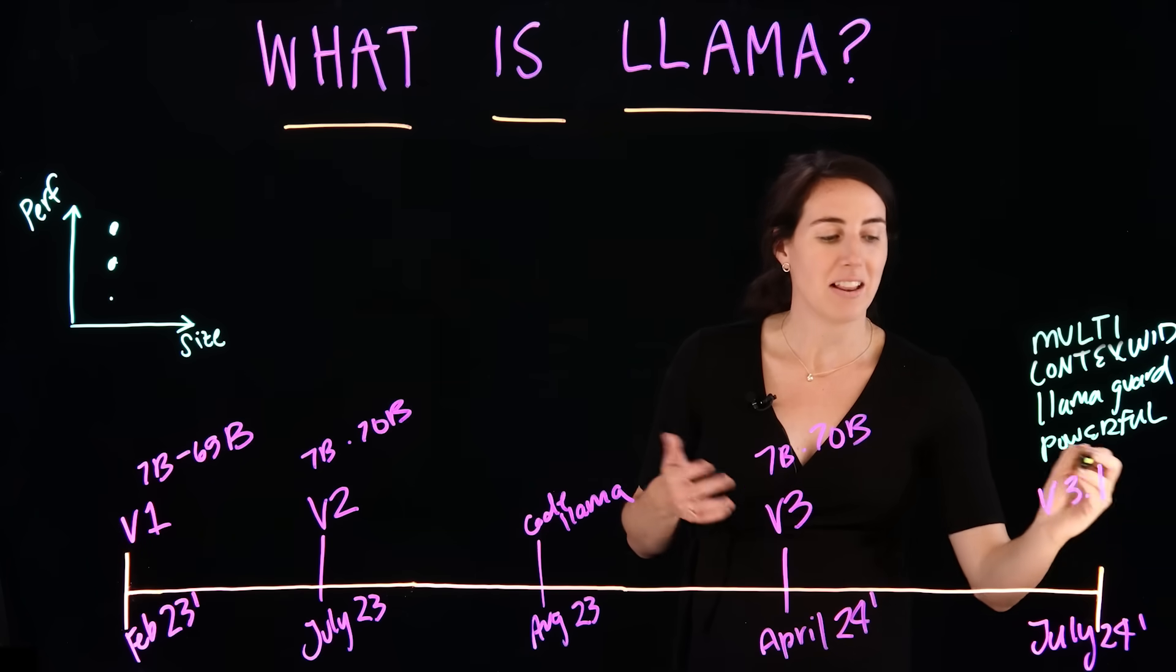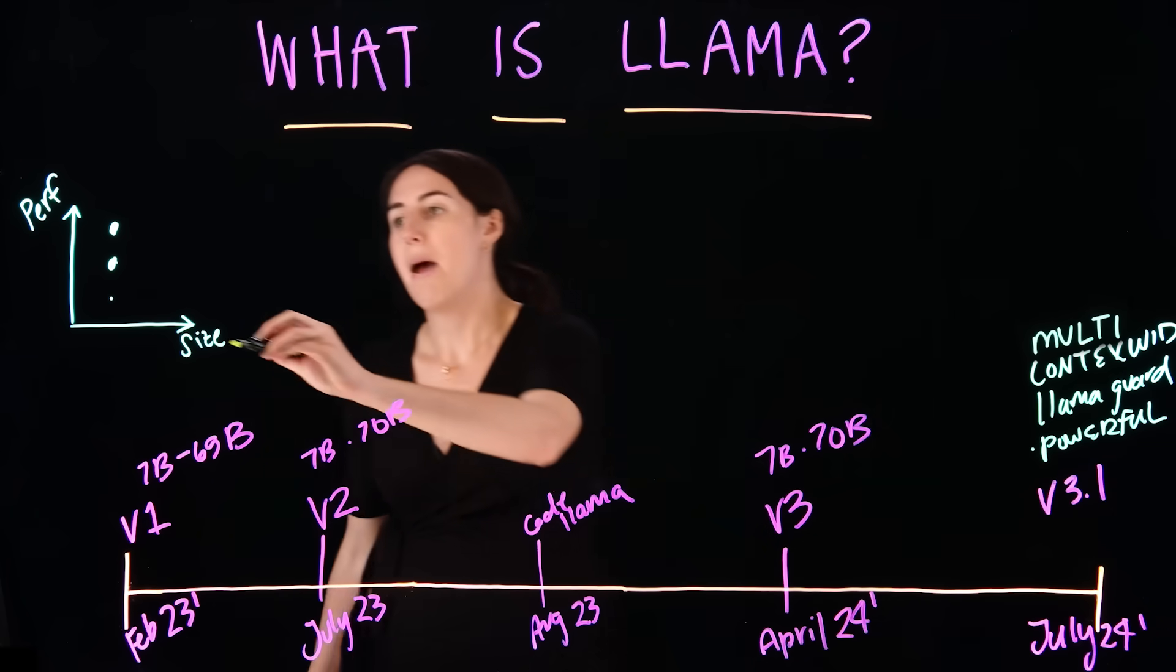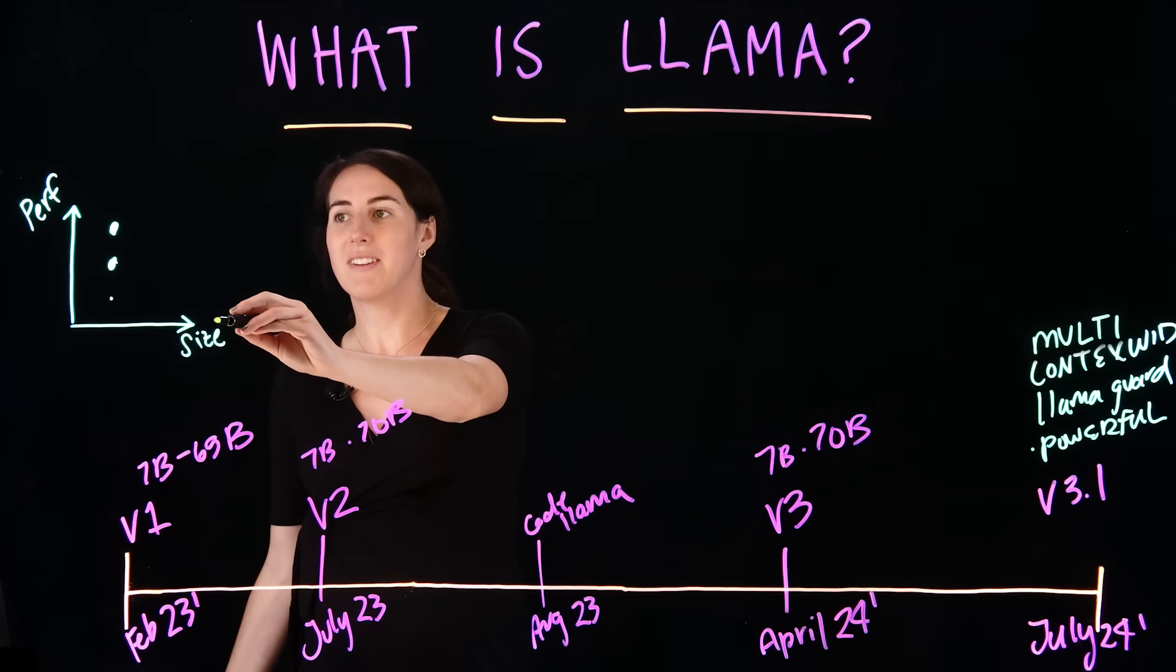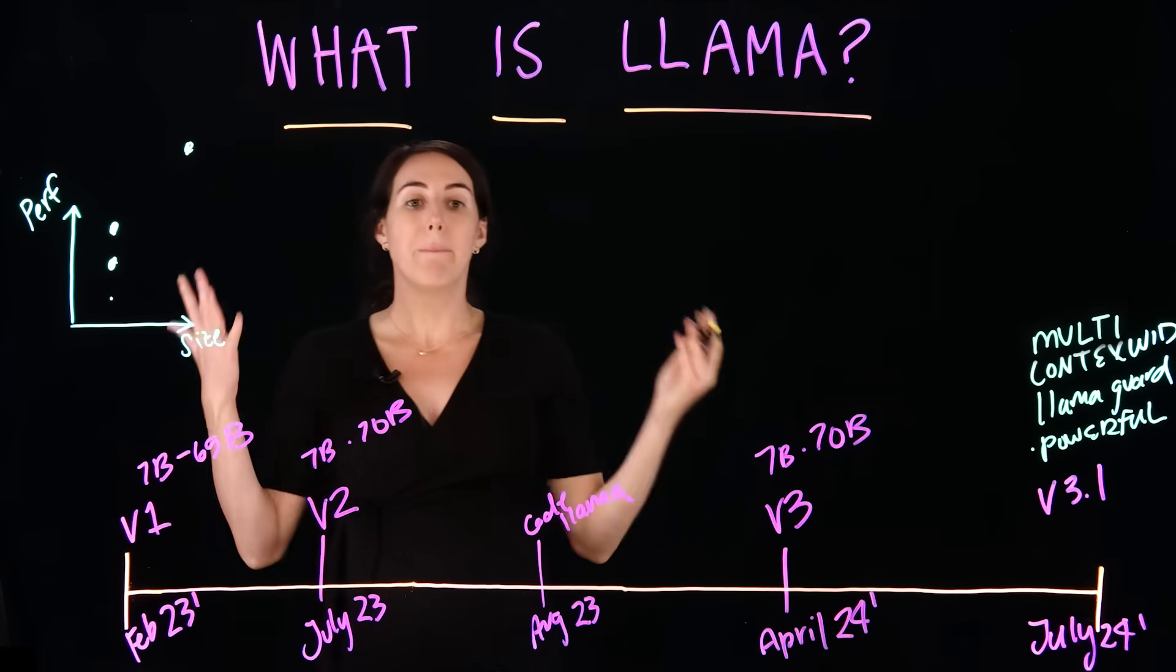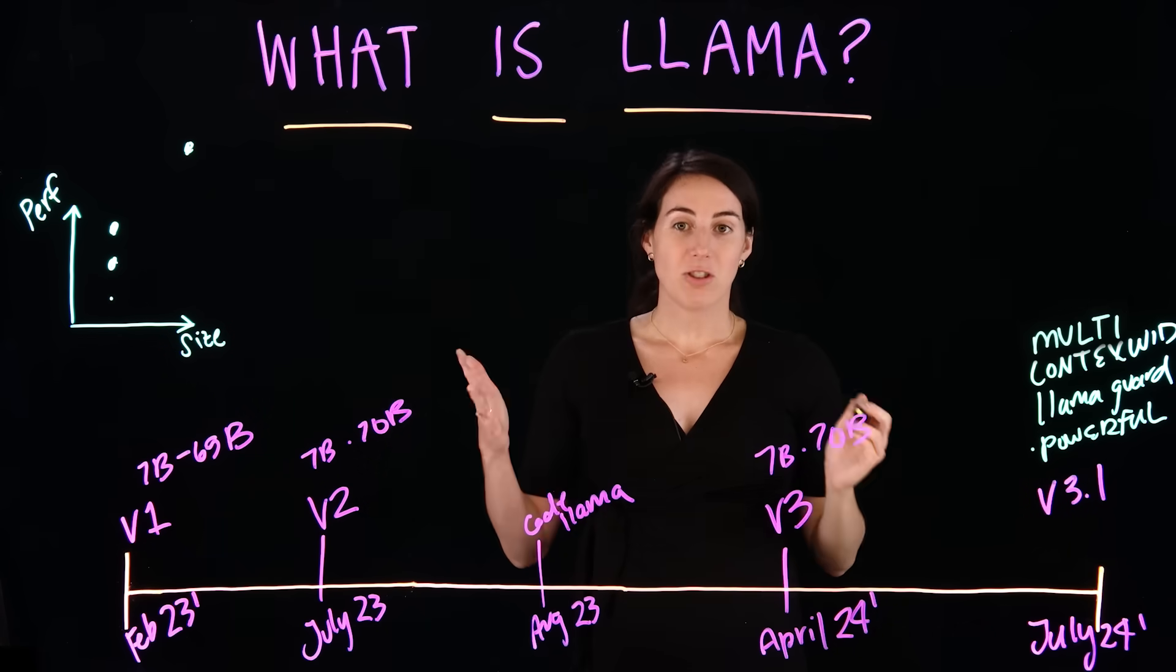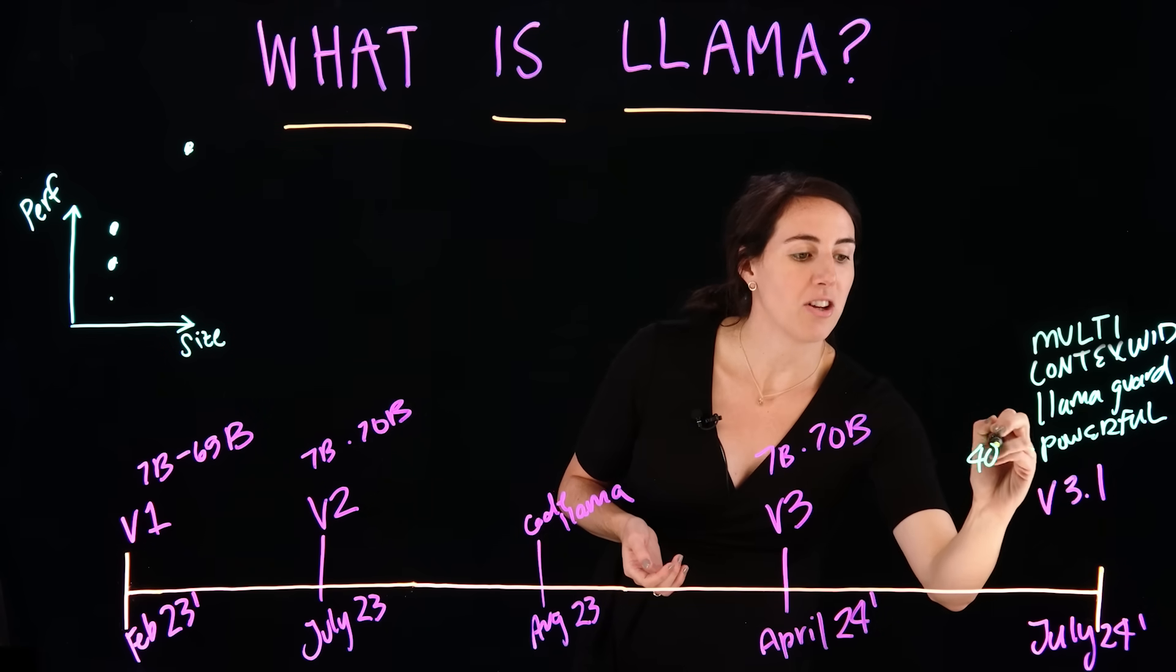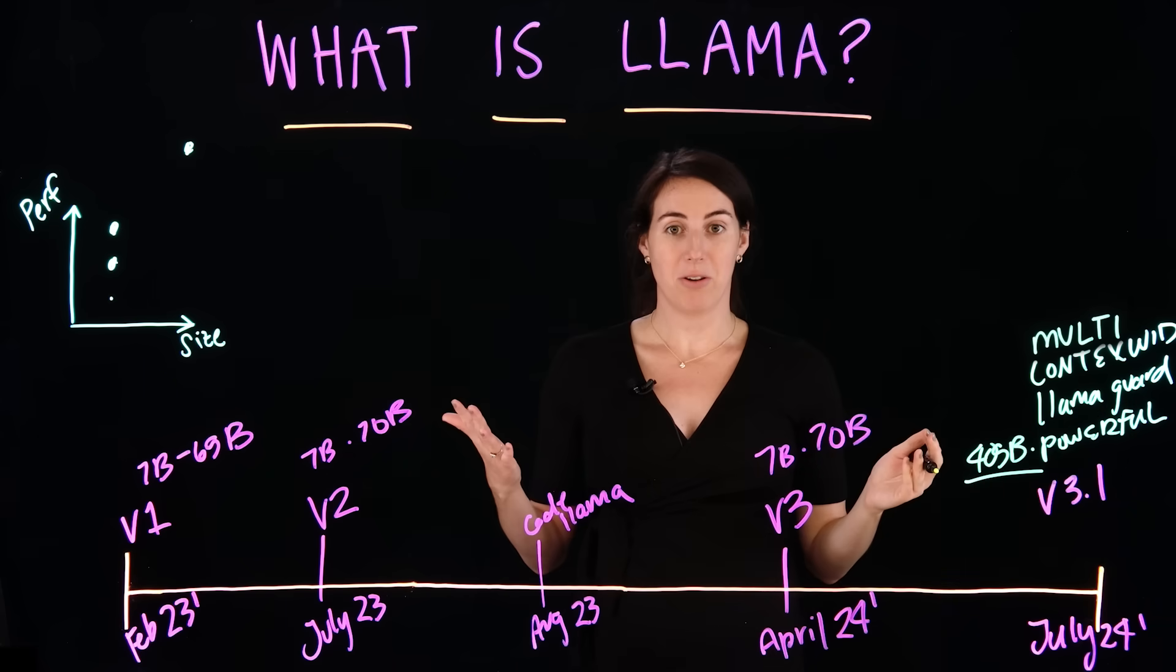And finally, again, Llama focused on power. So, this time Llama went much bigger in size, but better in performance with actually releasing a 405 billion parameter model.